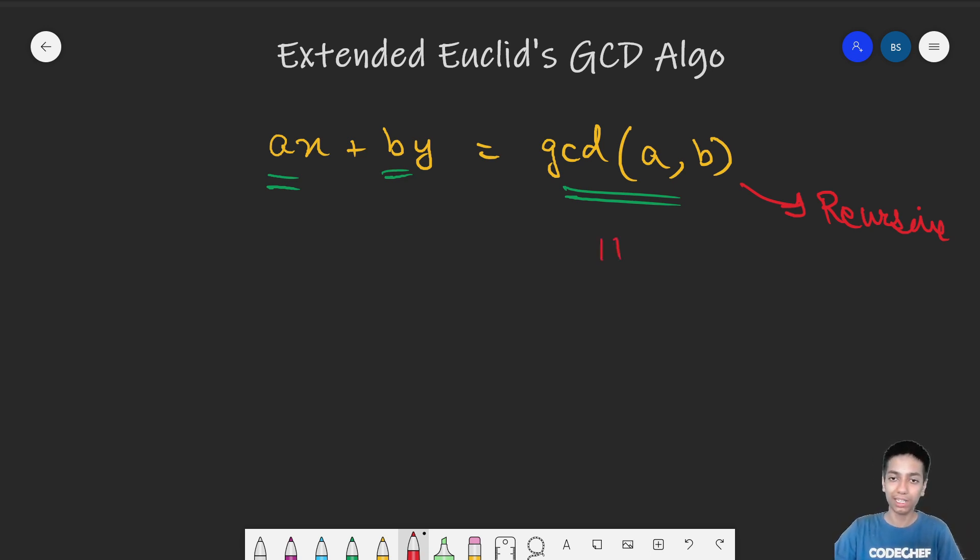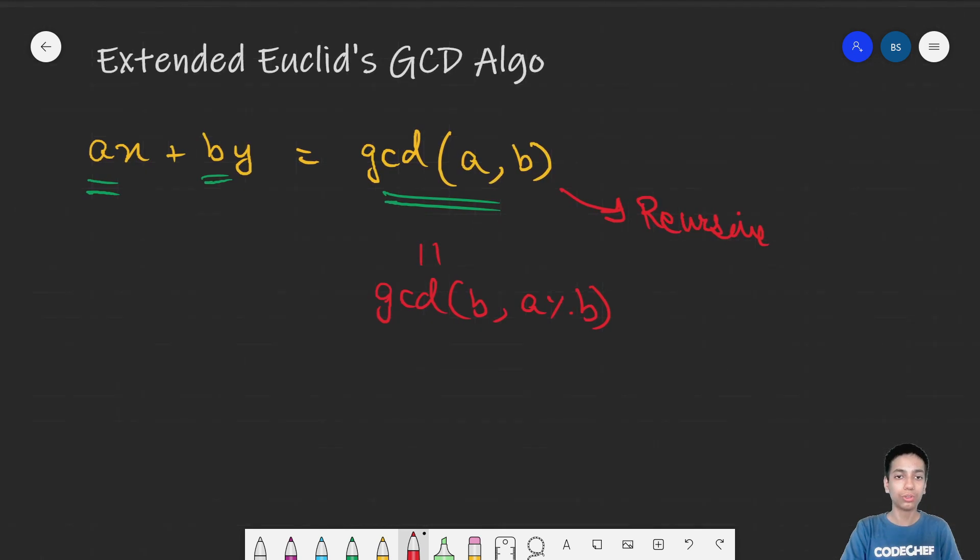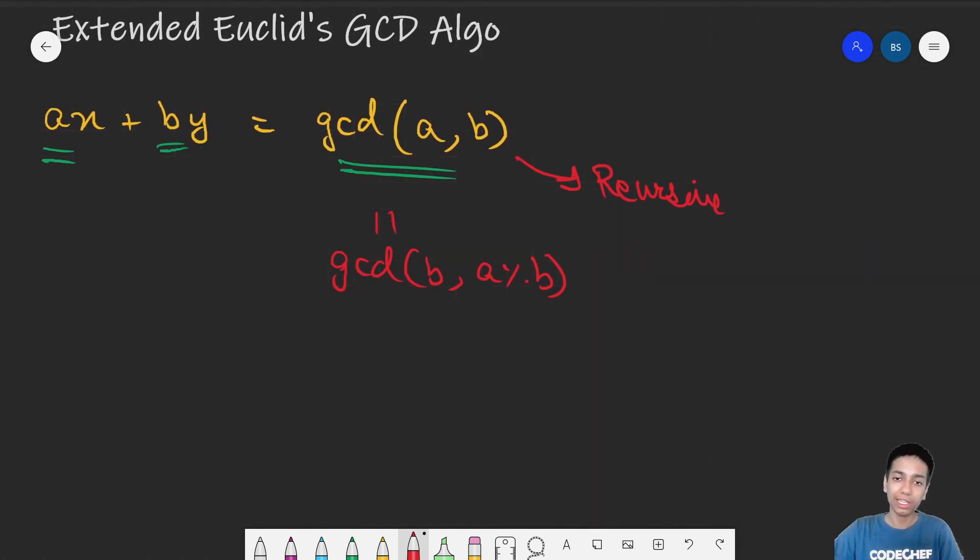Remember that this is nothing but GCD of B and A mod B. This is something we discussed in the previous video. If you haven't given it a watch, make sure to first go through that. This is again GCD of two numbers.